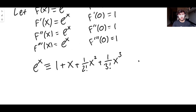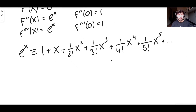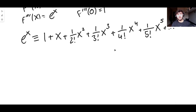You should be able to see a pattern now. We know the fourth derivative is e to the x, and evaluated at zero it's one, so we continue: one over four factorial x to the four, one over five factorial x to the five, and this goes on forever and ever. This is the Maclaurin series for e to the x.